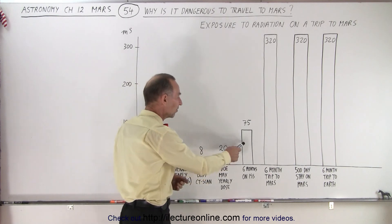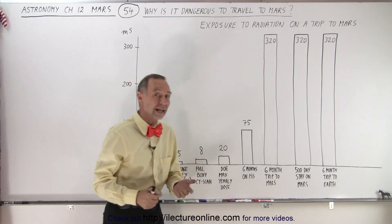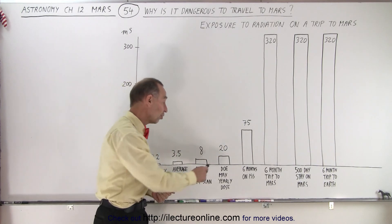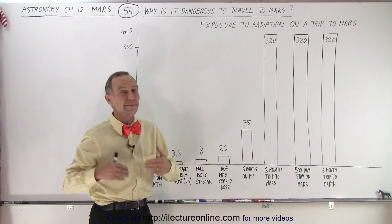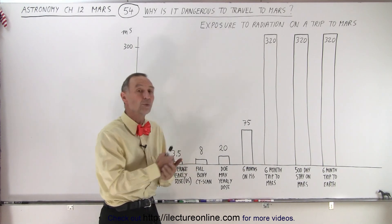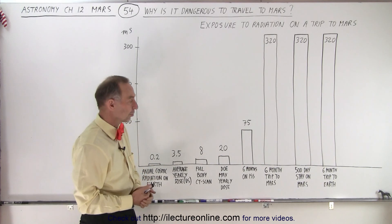If you're going to be an astronaut and spend six months on the ISS, the International Space Station, you'll receive 75 millisieverts, which is almost four times the maximum allowed by the Department of Energy for any person working around nuclear materials.